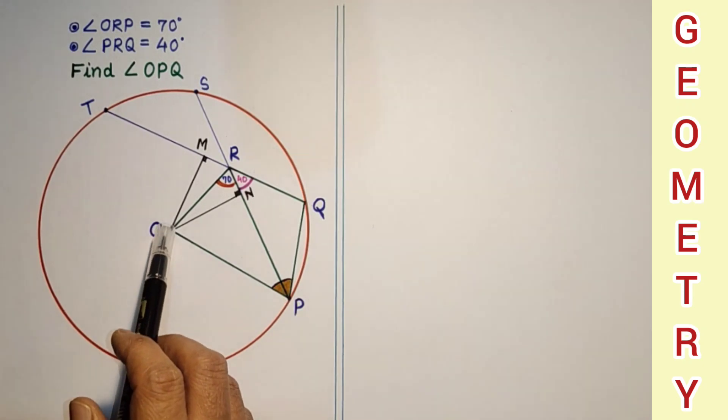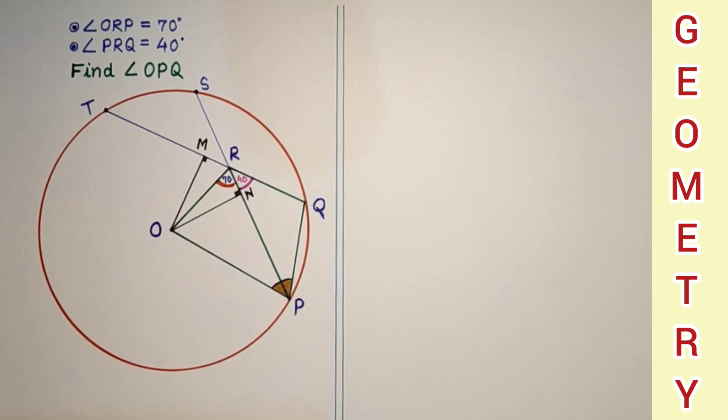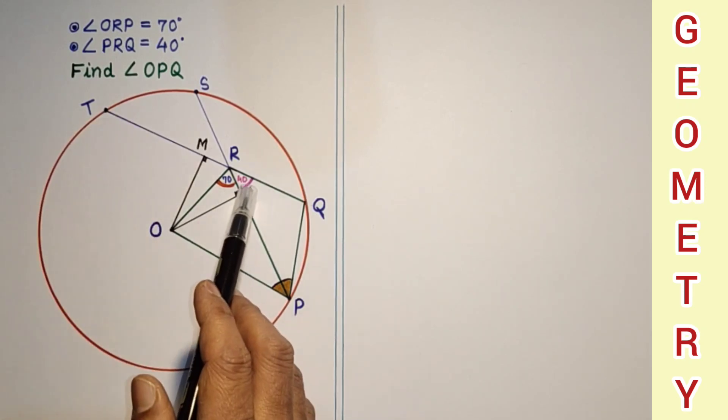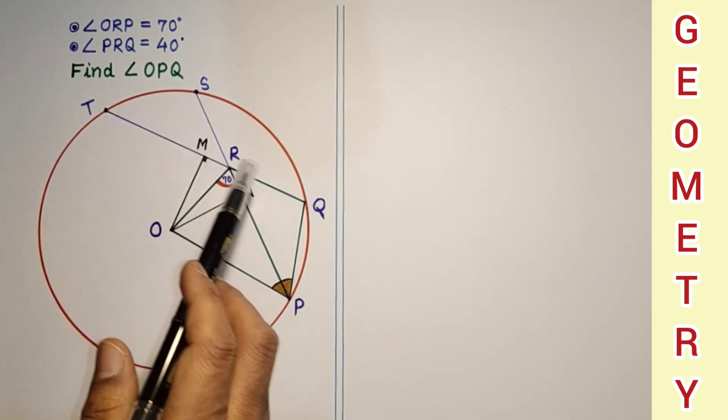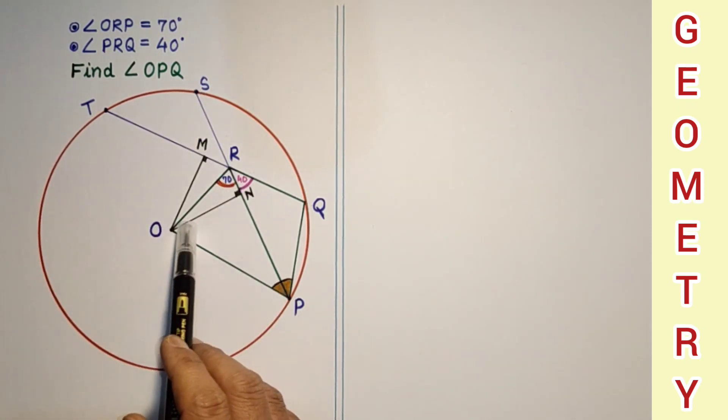From the center if we draw perpendicular to the chord, the chord will be bisected. So M is the midpoint of TQ, here N is the midpoint of PS. We can say that TM is equal to MQ, and SN is equal to NP.